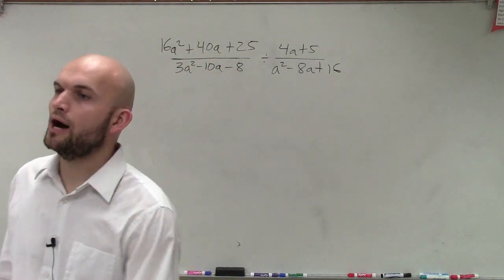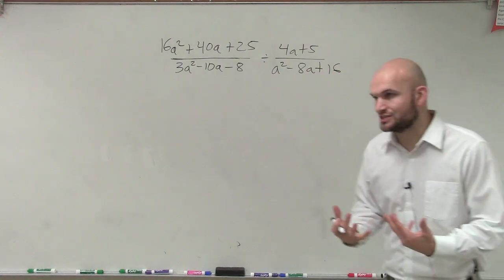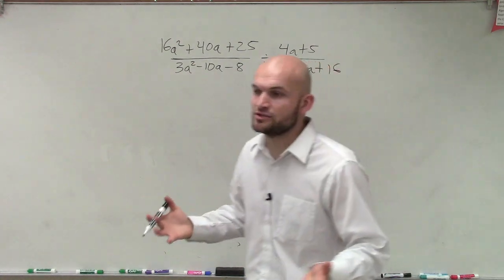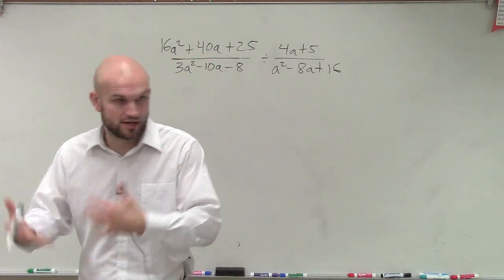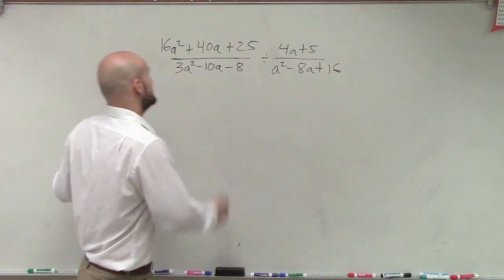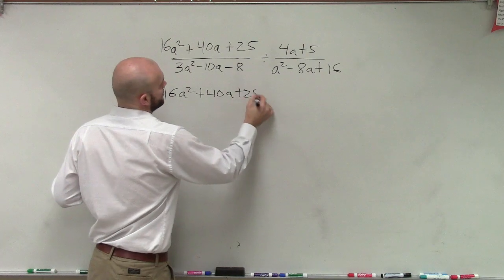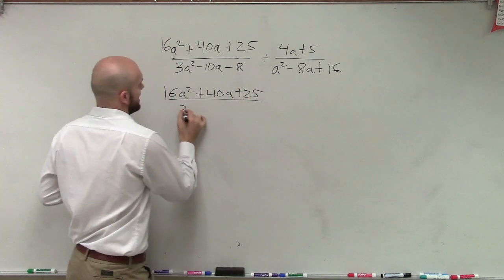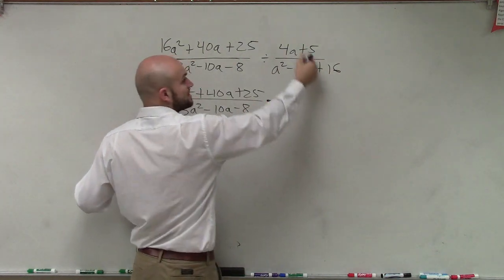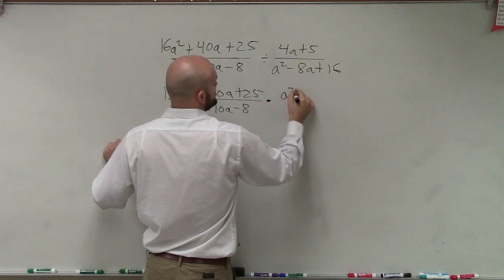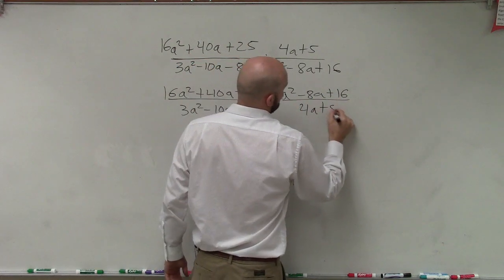Okay, so now what I'm going to do, Sadiq, is remember when we divide fractions, the simple way that we like to apply dividing fractions was to multiply by the reciprocal of the divisor, right? So now I'm just going to rewrite this as 16a squared plus 40a plus 25 divided by 3a squared minus 10a minus 8 times the reciprocal of my divisor, which is a squared minus 8a plus 16 divided by 4a plus 5.